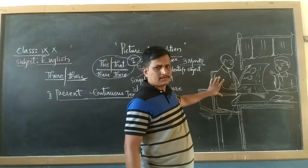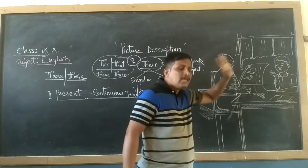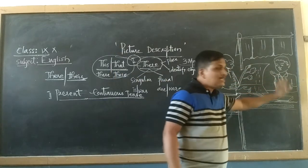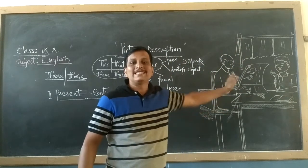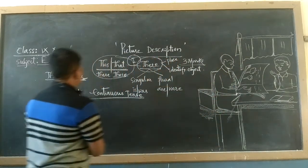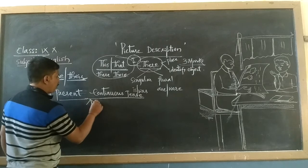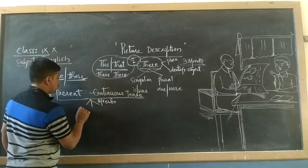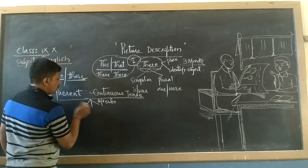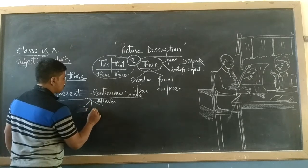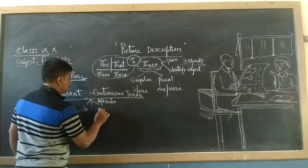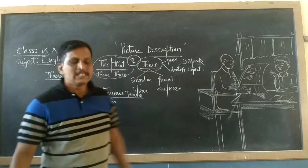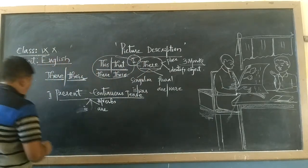Present continuous: 'There is a man. He is reading a newspaper. There is a boy. He is looking at his father.' With the help of the helping verbs 'is' and 'are,' we can make the construction of the sentence. 'Is' and 'are' are the helping words used here. Now we can make the construction of the sentence.